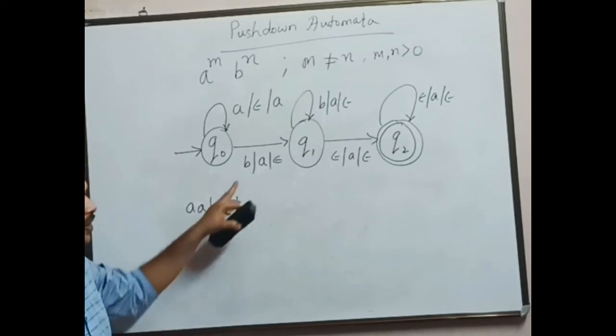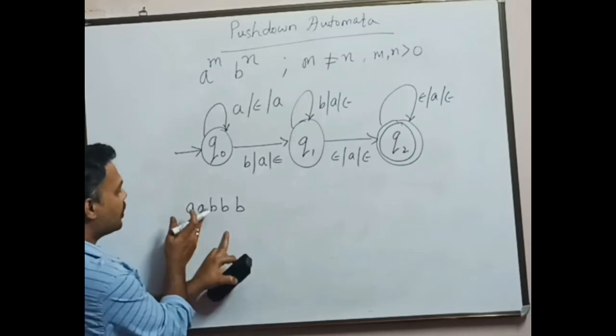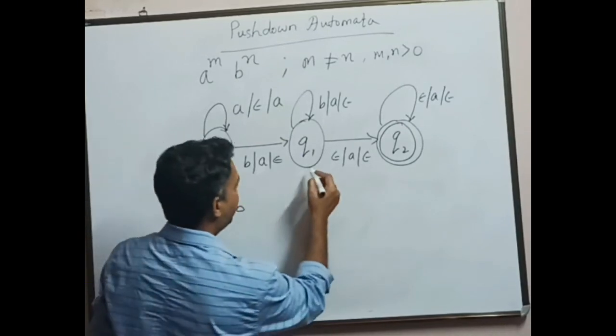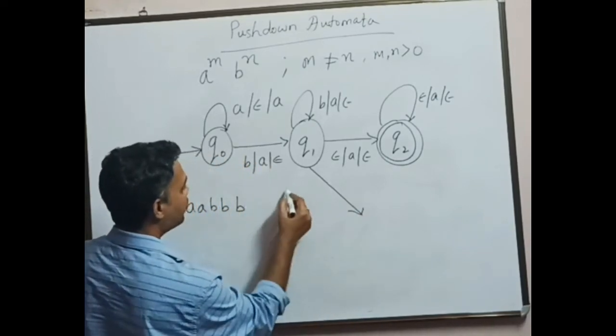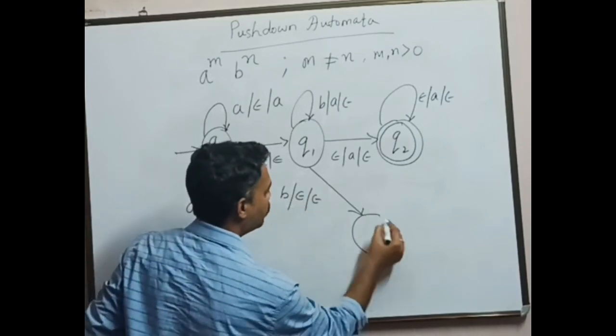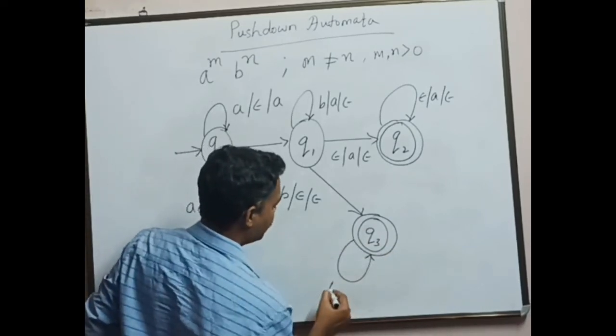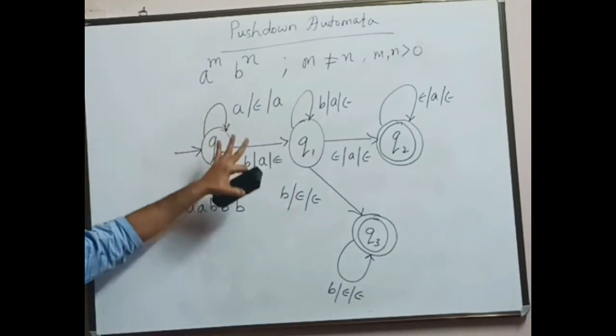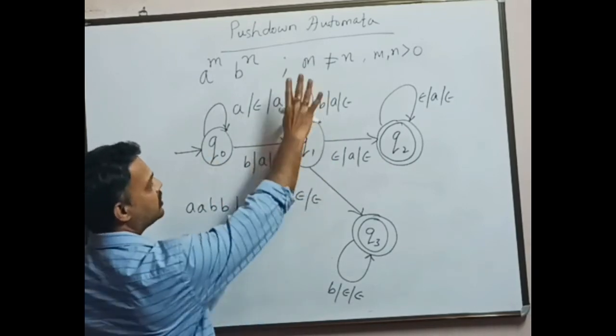If this string is given as input to the PDA, if there are more number of b's, when a's are all popped from the stack, we are going to simply consume b. That means the PDA takes another diversion, wherein it says if there are more number of b's, we simply consume and move to the final state. In this final state, it goes for looking for more number of b's.